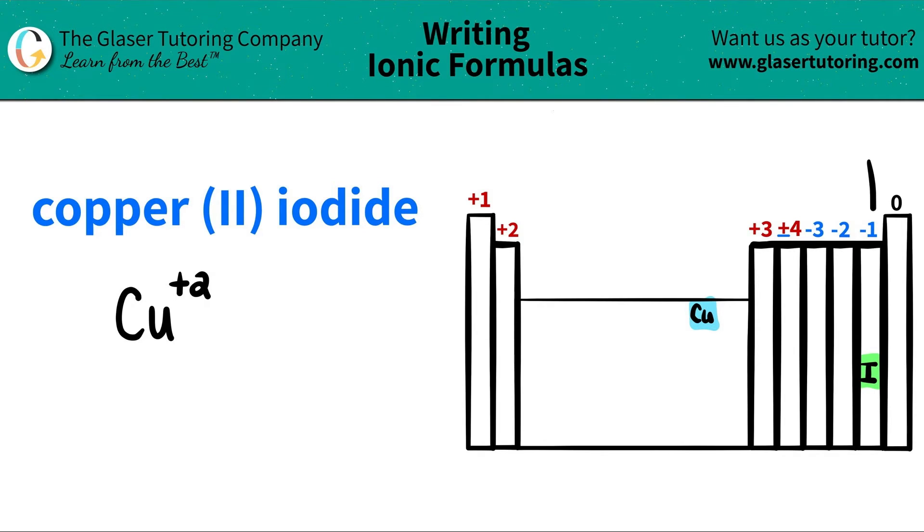It's a halogen in group 7A or 17, and it's a -1 oxidation state. So I'm just going to write down that I have I and it's a -1 charge.